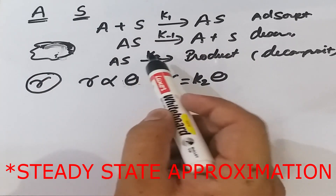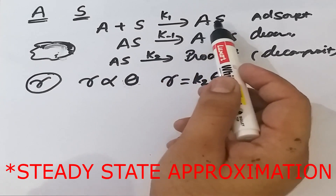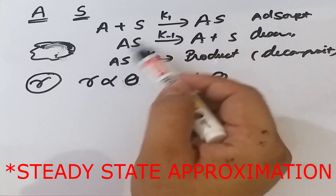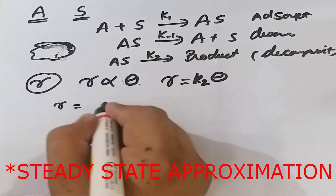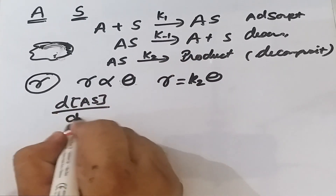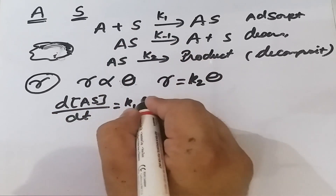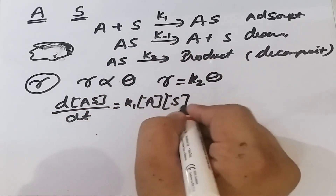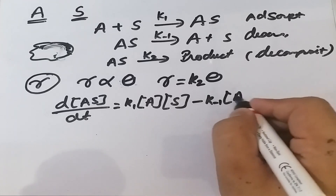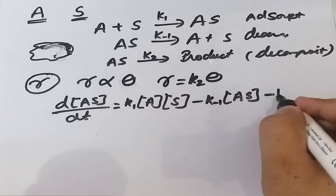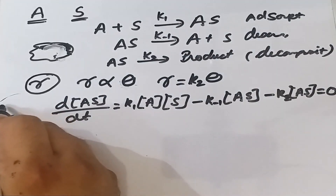We apply the steady-state approximation (SSA) to the intermediate AS. According to SSA, d[AS]/dt = k₁[A][S] − k₋₁[AS] − k₂[AS] = 0.